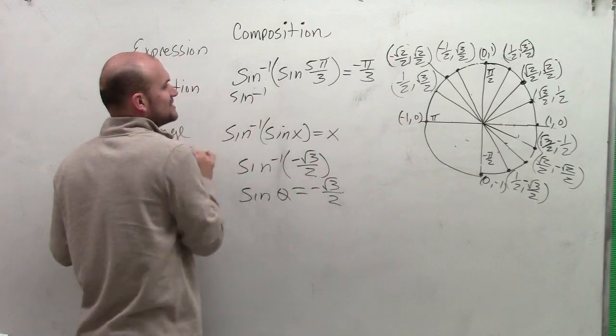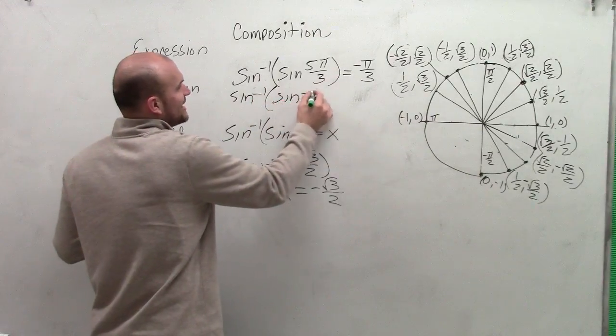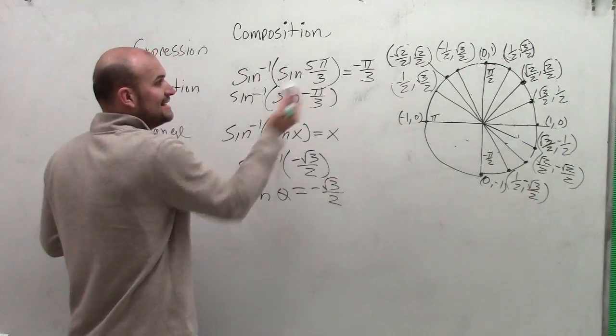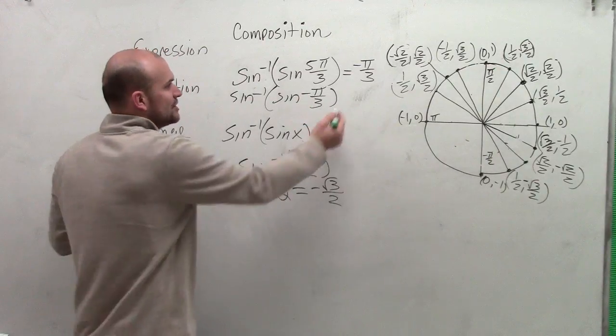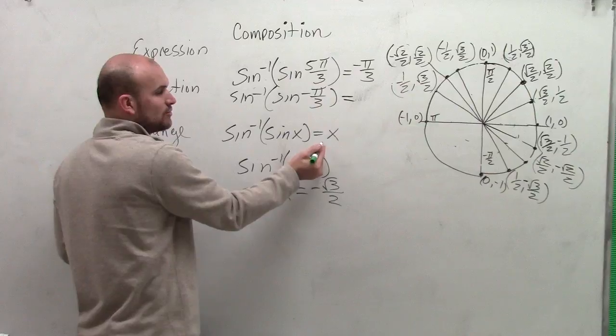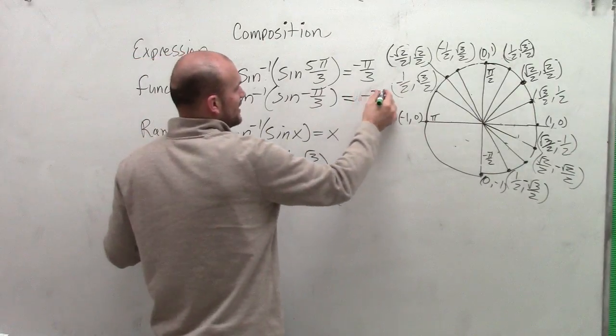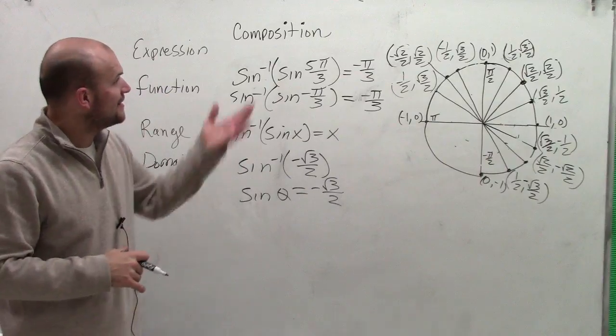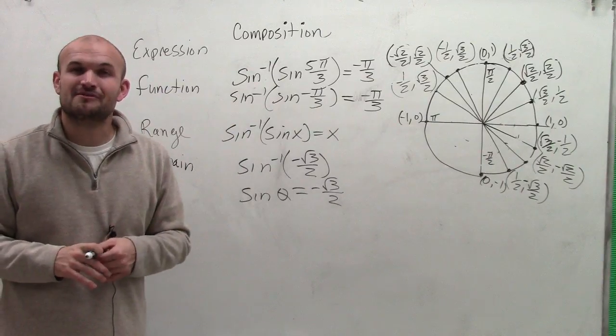The other way you could write this is by using inverse sine of sine of negative π over 3. Since those are coterminal angles and negative π over 3 is within your range, you can use your inverse property, which I wrote down here below, to just say your answer is negative π over 3. So there you go, ladies and gentlemen. That's how you evaluate the composition of your functions. Thanks.